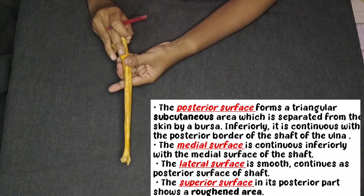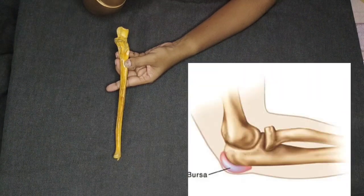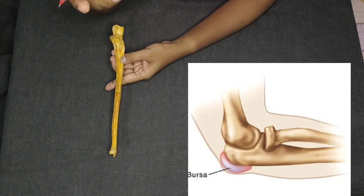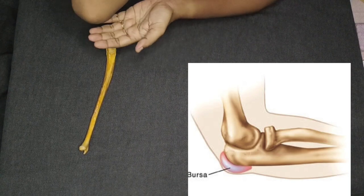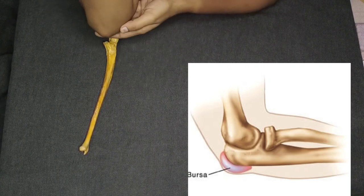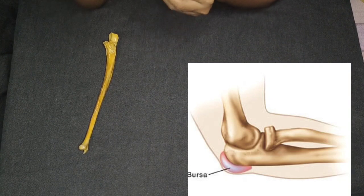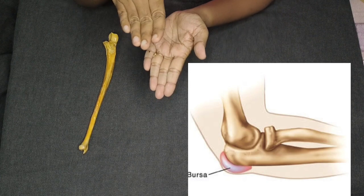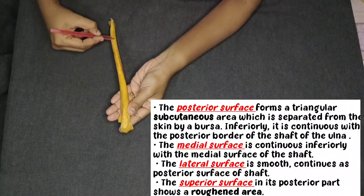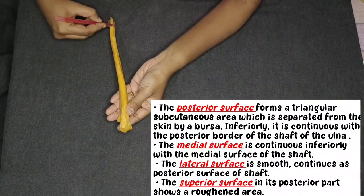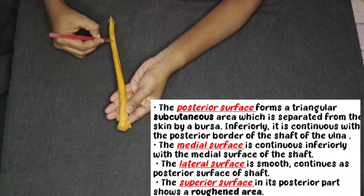The posterior surface is separated by a bursa. The bursa is a fluid-filled sac — it acts as a cushion in jerky movements at joints. So between the skin and the olecranon process there is a bursa. This posterior surface is continuous with the posterior border of the ulna — the posterior surface of the olecranon process is continuous with the posterior border of the ulna.